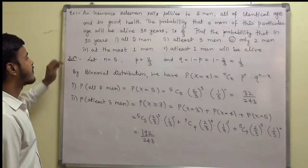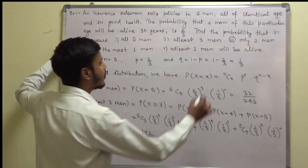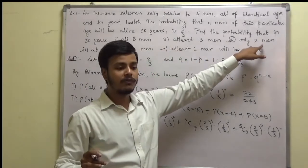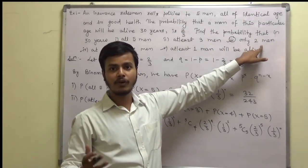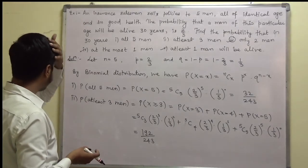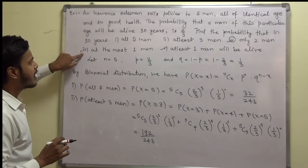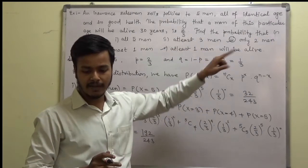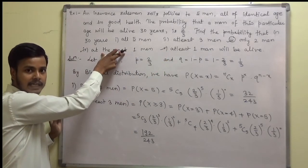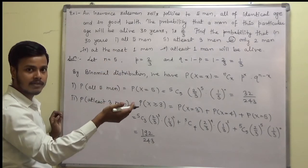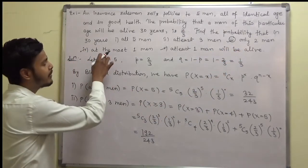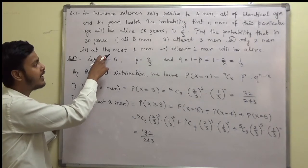Next we have to find three more things: the probability of exactly two men, at least one man, and at most one man being alive. The probability of exactly two men is probability of X equals 2. At most one means X equals 0 or X equals 1. You can find these on your own.